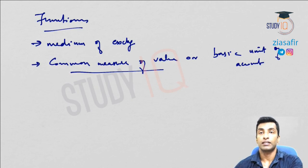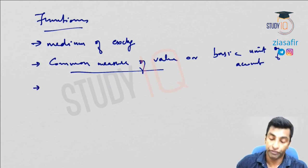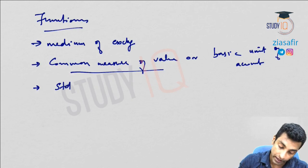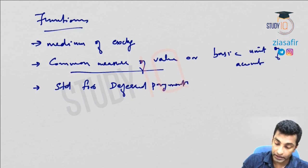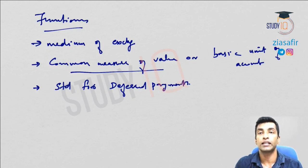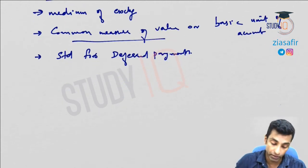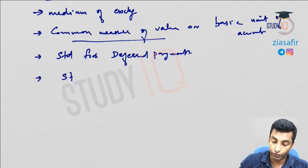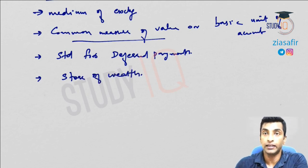The third function is standard for deferred payments. Future monetary obligations can be settled in terms of money. Finally, the fourth function is store of wealth — money is actually an asset.